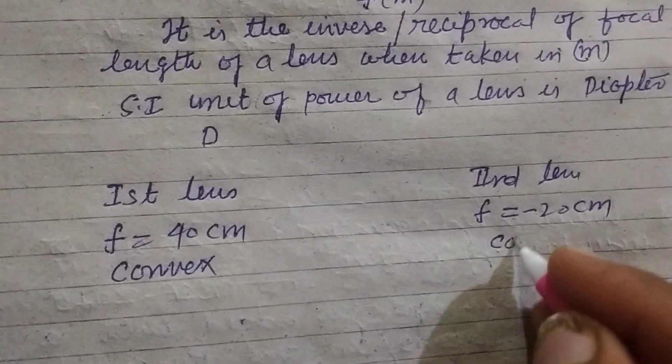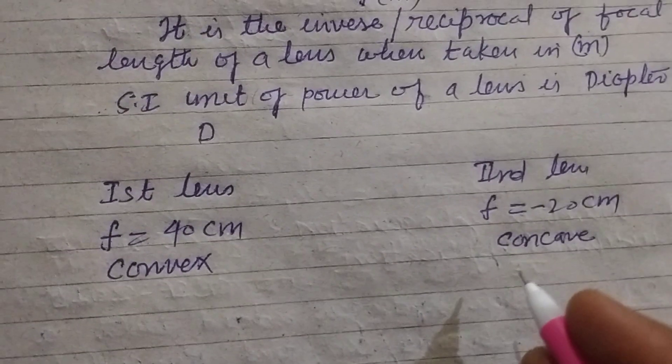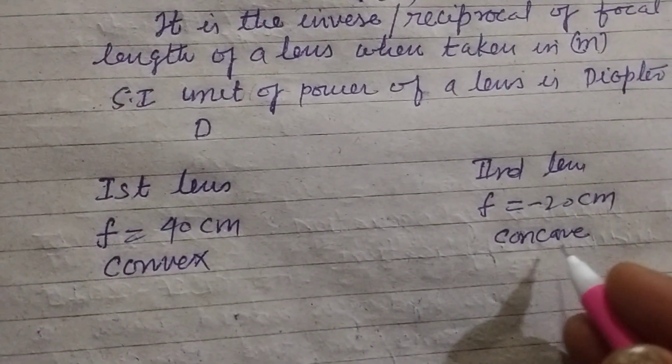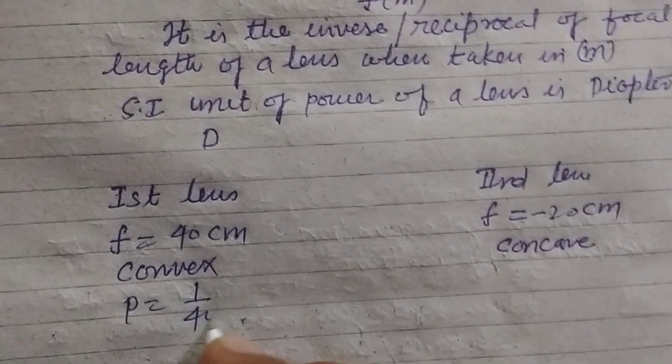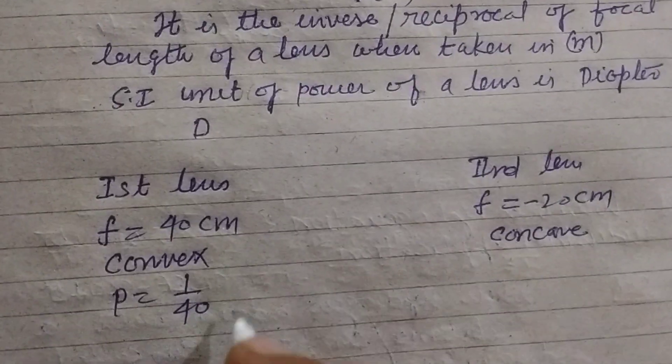And this is concave. Lenses with negative focal length are concave lens.